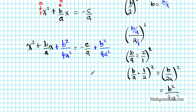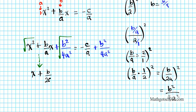Now we have a perfect square trinomial on the left side. We are going to factor it using a factoring trick: read the first term, read the last term, and bring down the middle sign. The square root of x squared is x, the square root of b squared is b on the numerator, the square root of 4 is 2 and the square root of a squared is a in the denominator — that whole quantity squared. Notice that if you multiply x and b over 2a together and double it, you get the middle term, confirming this is a perfect square trinomial.